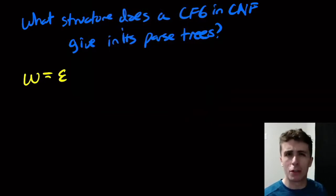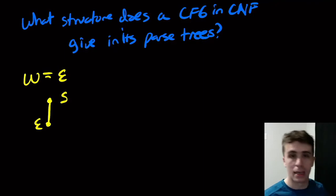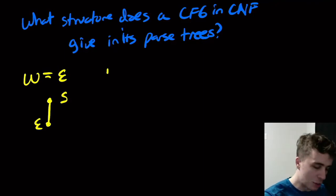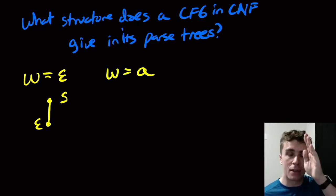So I break it down into multiple cases here. It's not really truly necessary to do this, but it's just a good thought experiment. So if we have w being this empty string, the only possible parse tree here is s making epsilon, which is not really interesting.